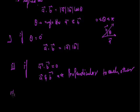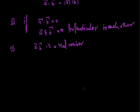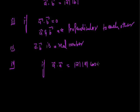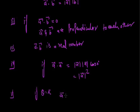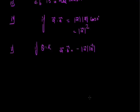The third property: a·b is a real number. Next, if we take a·a, it equals |a||a|cos0 = |a|². If θ = π, then a·b = −|a||b|.